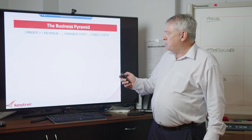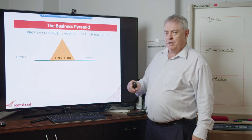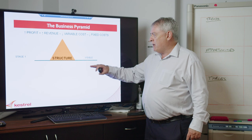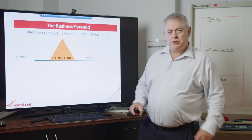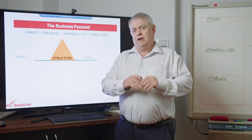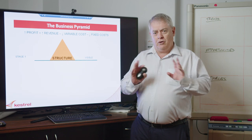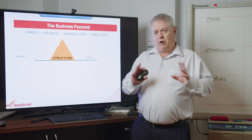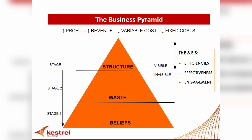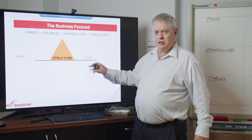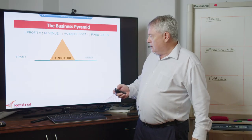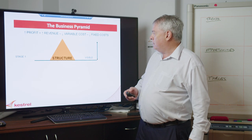The business pyramid links into that in this way. Stage one: what's visible? The structure of the business — your people, your premises, your equipment, your products, your stock. That's all very visible. We can improve profitability by increasing the revenue and reducing obvious costs. That's what I call above the line.